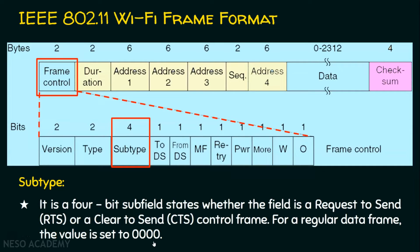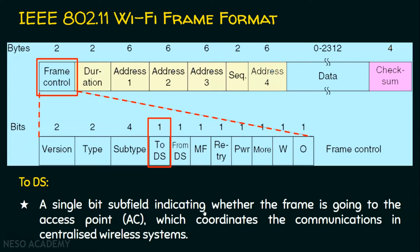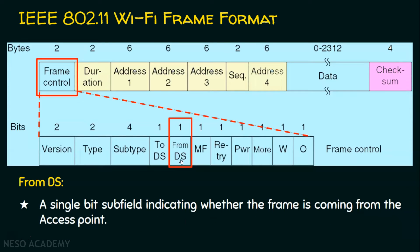The next field is To DS — a single-bit subfield that indicates whether the frame is going to the access point, which coordinates communication in centralized wireless systems. When frames are directed to the access point, this field is set to 1. The From DS field is a single-bit subfield indicating whether the frame is coming from the access point. If this field is set, the frame is coming from the access point.